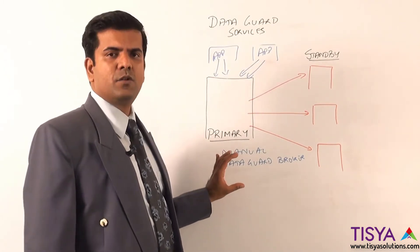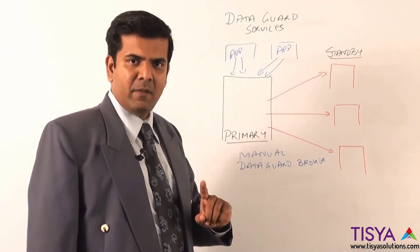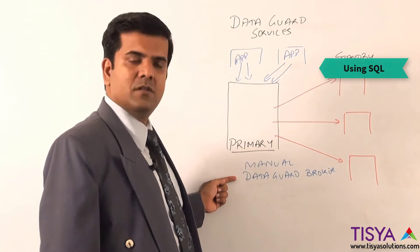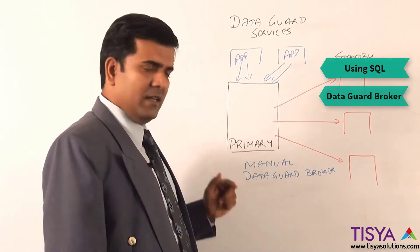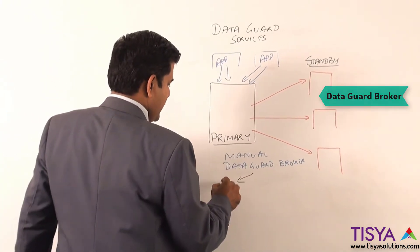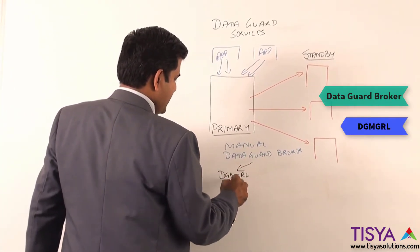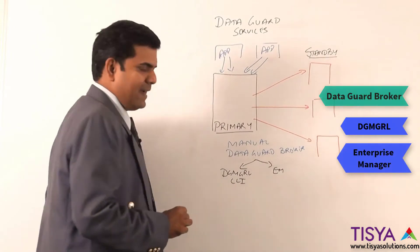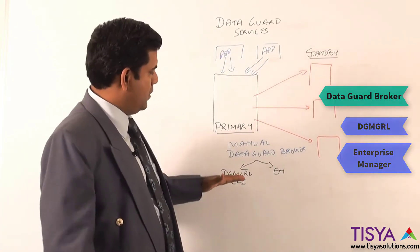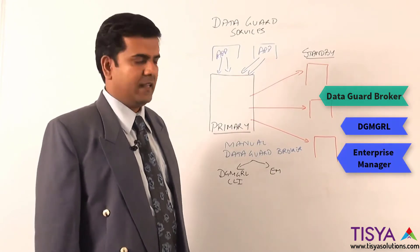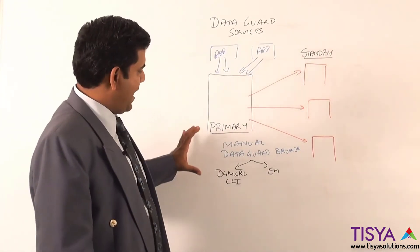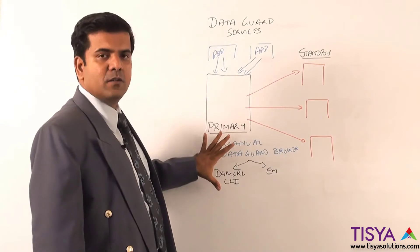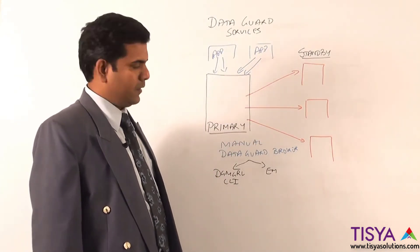You need to remember: you can either manage a Data Guard configuration with SQL manually, or you can use the Data Guard Broker. When you are using Data Guard Broker, you again have two choices. You can use the DGMGRL command line utility, or you can make use of the Enterprise Manager facility which would ensure the Data Guard configuration is taken care using the broker. We have a dedicated video in which we will talk about how these are used. This is only to help you understand there is a feature through which you can manage the Data Guard configuration.